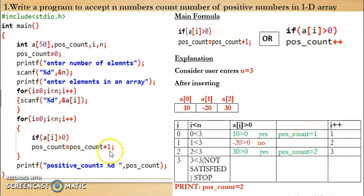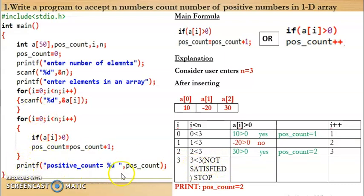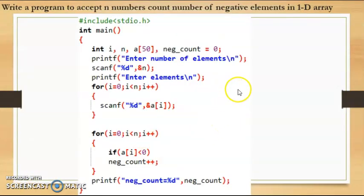Then i becomes 1, checks 1 less than 3 — yes. a[1] is minus 20, which is not greater than 0, so it won't execute the if statement — i increments directly. i becomes 2, checks 2 less than 3 — yes. a[2] is 30, greater than 0, so positive_count increments to 2. Then i becomes 3, not less than 3 — loop terminates. Finally it prints the positive_count.